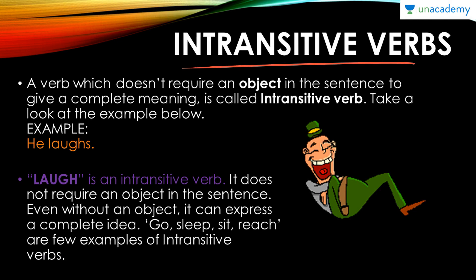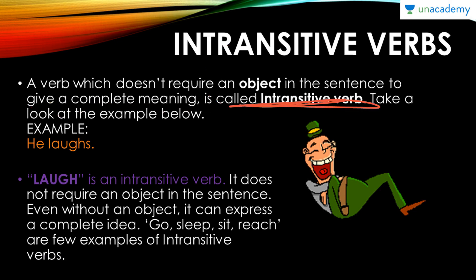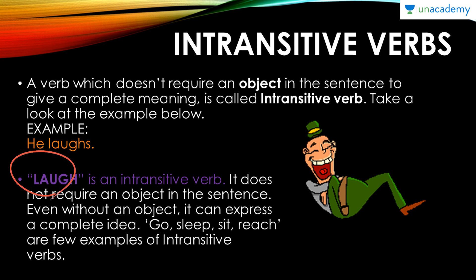Intransitive verbs — definition. A verb which doesn't require an object in the sentence to give a complete meaning is known as an intransitive verb. It is just the opposite of transitive verbs. For example: he laughs, he sings, she sang, she sat. All these verbs in sentences don't need an object to complete the whole sentence. So here, 'laugh' is an intransitive verb — it does not require an object, and even without one it can express a complete idea.